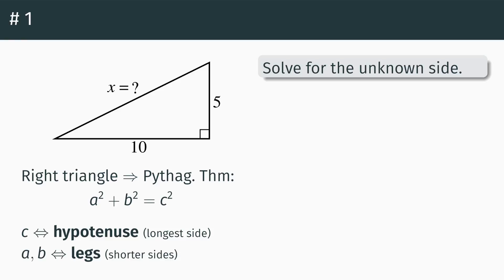For the problem that we're working on here, we see that the side that's opposite that right angle is that x side, and the two legs are the ten and the five, so we set up with that in mind. A squared plus b squared equals c squared becomes ten squared plus five squared equals x squared — our two legs squared and added together equals the hypotenuse squared.